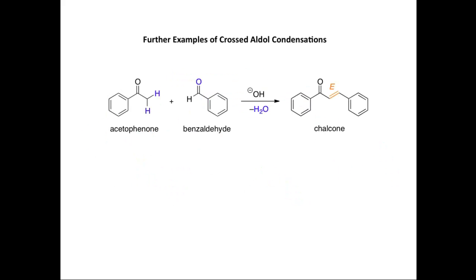We'll finish up by looking at a couple of other examples of crossed aldol condensations. In the first example, we're looking at the reaction of acetophenone — this methyl ketone — with benzaldehyde, this aromatic aldehyde, in the presence of hydroxide ion. Acetophenone can be deprotonated at one of its alpha hydrogen atoms. The enolate ion can then attack the carbonyl group of benzaldehyde. After protonation and then elimination of water, we form this enone. Again, we get the E-stereochemistry of the carbon-carbon double bond because we form the most stable product possible from that elimination reaction.